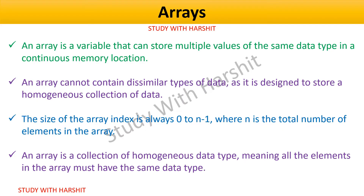The size of the array index is always 0 to n-1, where n is the total number of elements in the array. The index of an array always starts from 0 and goes up to n-1. This means that if an array has 10 elements, its index would range from 0 to 9.